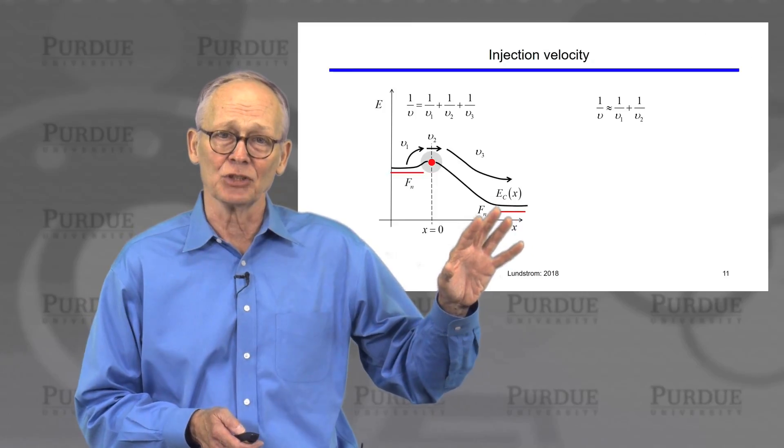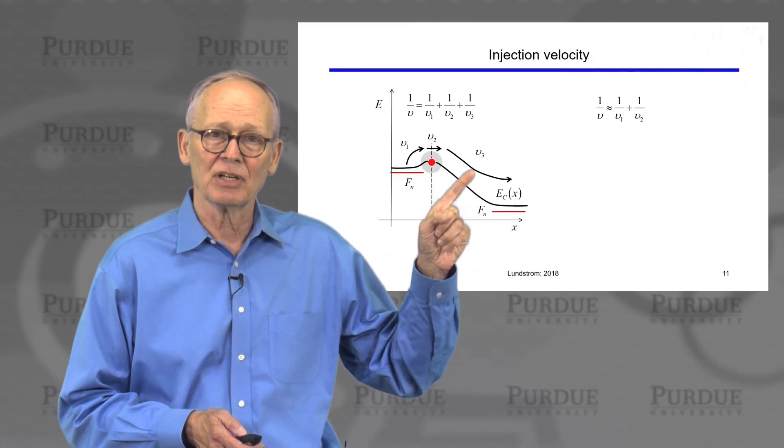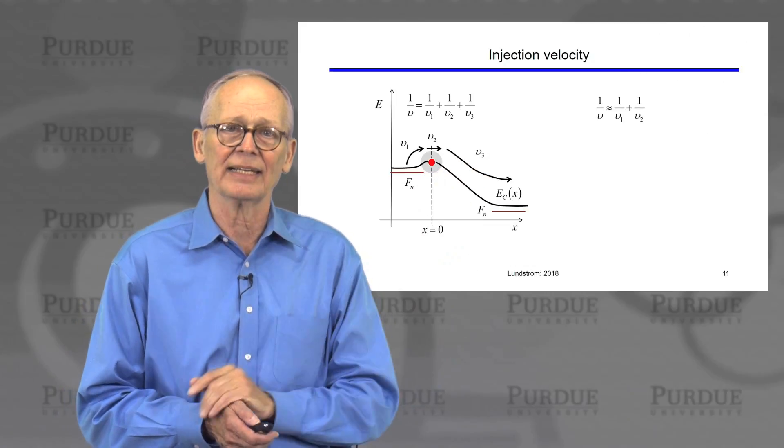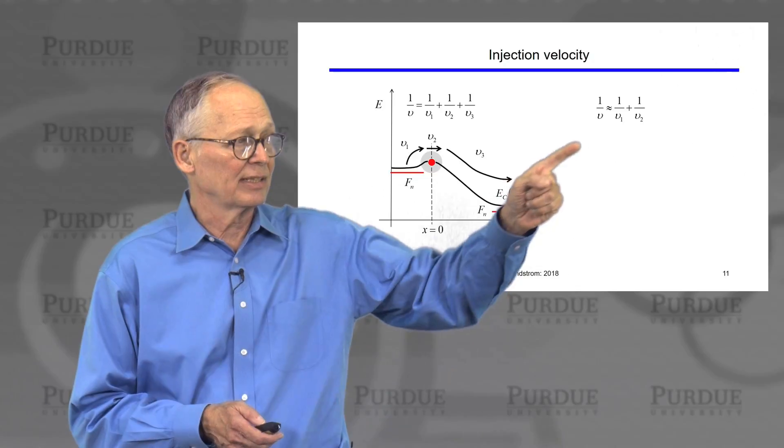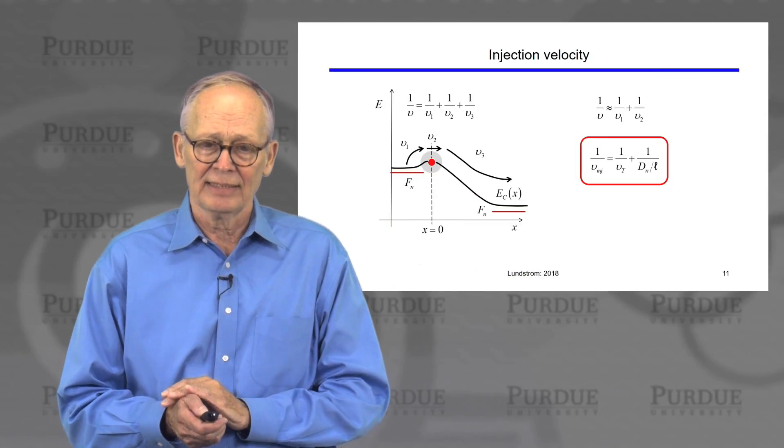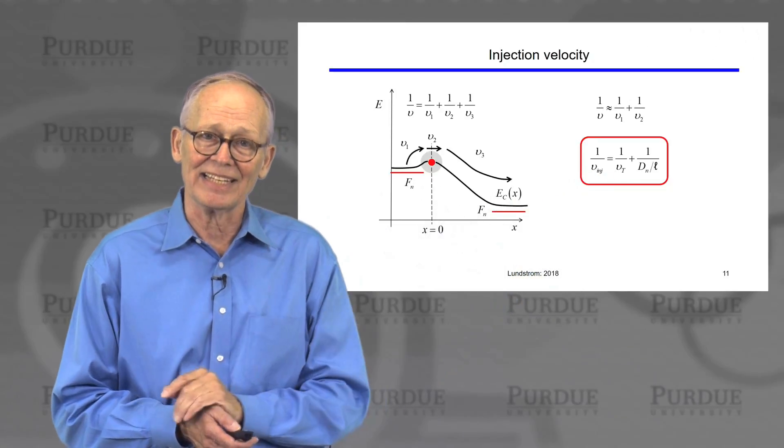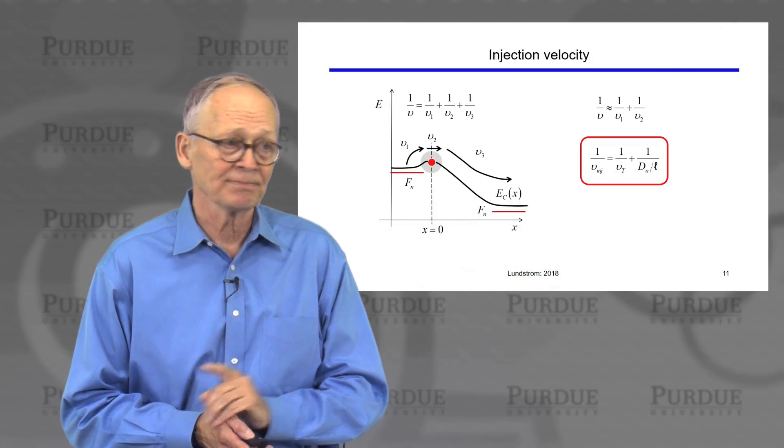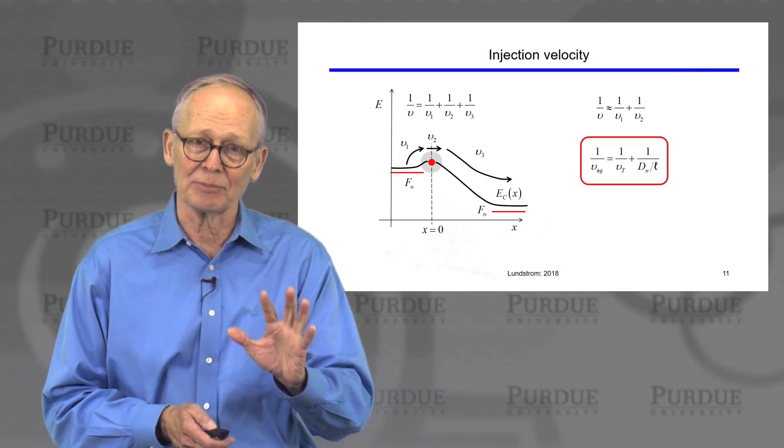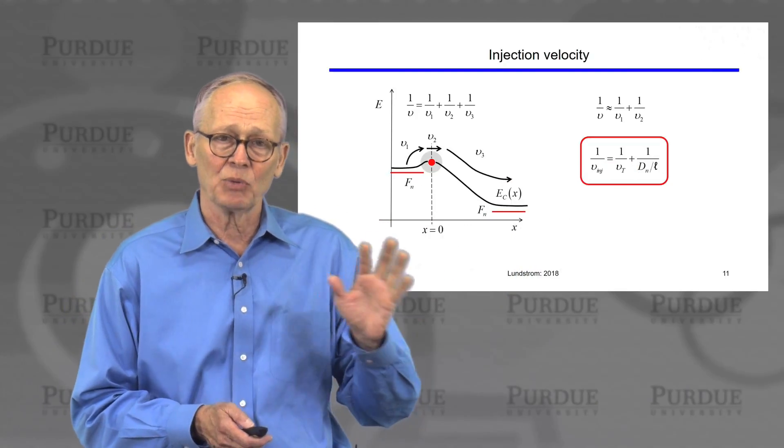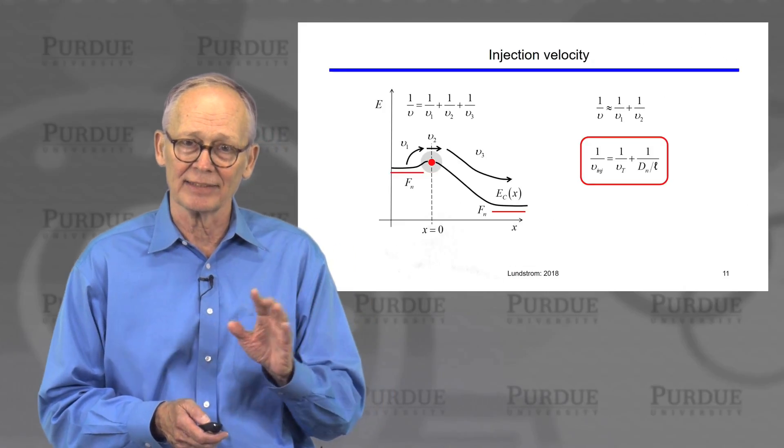What we've been assuming, and it's a good assumption, is that the electric field is so strong and the velocities are so high in this collector region that it doesn't limit the current. What the current is limited by is the first two processes. It's limited by the velocity at which electrons are injected into the channel from the source and the velocity at which they can diffuse across that bottleneck regime. Whichever one of those two velocities is the smaller will dominate.